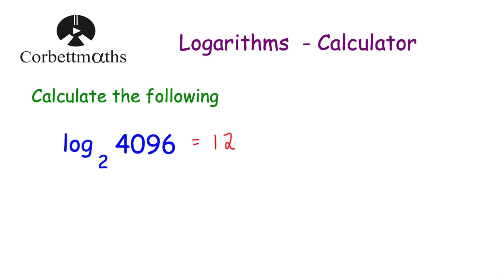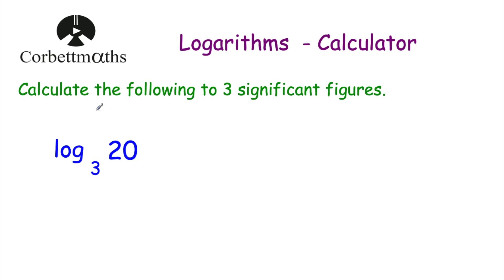Let's look at our next question: calculate the following to three significant figures. We've got log to base 3 of 20. In other words, what power do we need to raise 3 by to get to 20? I can tell this is going to be a decimal number because the question says to give our answer to three significant figures. Also, 3 squared is 9 and 3 to the power of 3 is 27, so this is going to be 2 point something.